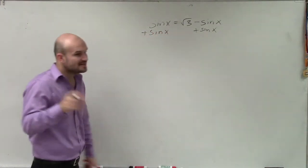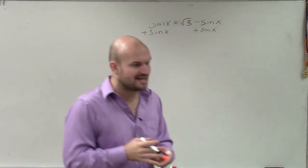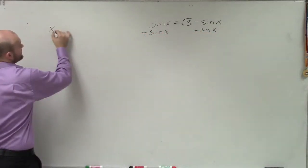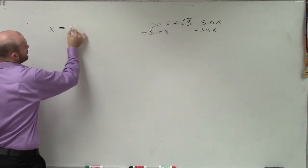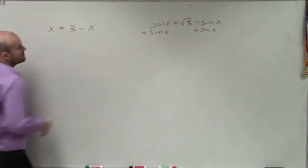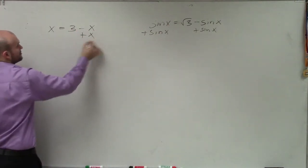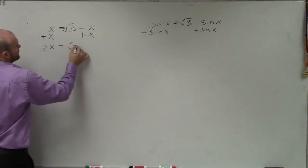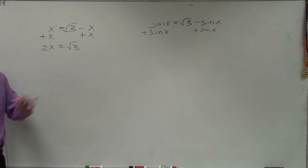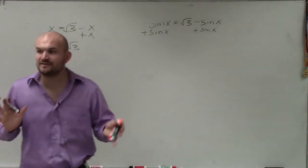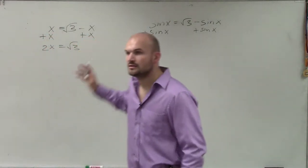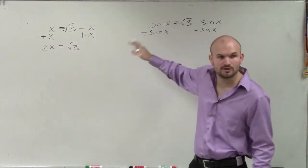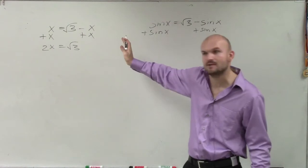Just like simplifying and verifying identities, when you guys have difficulty with this, go back to variables. What if this was x equals 3 minus x? To solve this, you would add the x's to both sides. Forget about the sines and cosines — if it's messing you up, you need to go back to variables and just solve it that way.